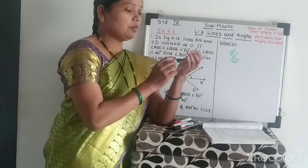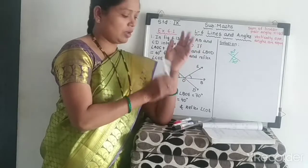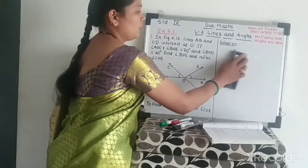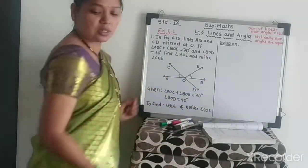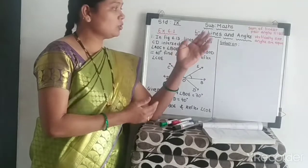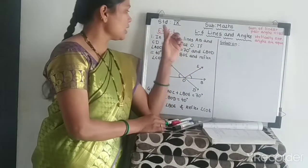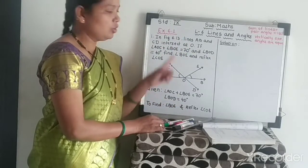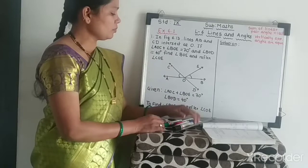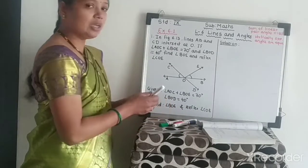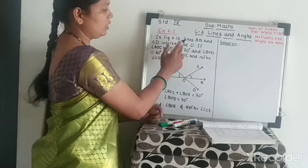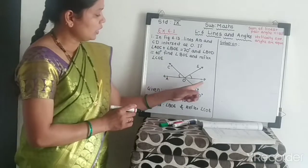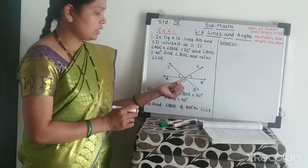We also saw a proof for vertically opposite angles, which is important and often asked in exams. Now, using all those concepts, let us start with Exercise 6.1, question number 1. I have written the question — you also write it down.